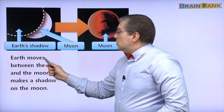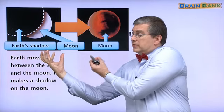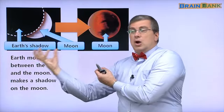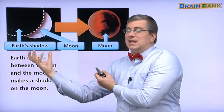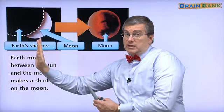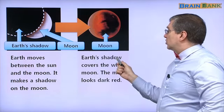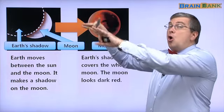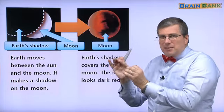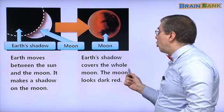So, earth moves between the sun and the moon. Here is the earth. Here is the moon. There is the sun. Sun, moon, earth. Earth is between the sun and the moon. It makes a shadow on the moon. It blocks the light. And it covers the whole moon. Earth's shadow covers the whole moon. All of it. Not part, but all of it. The whole moon.